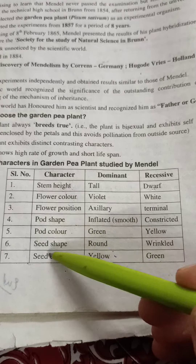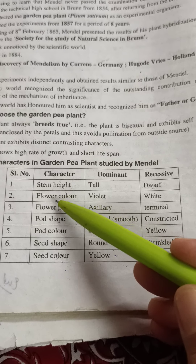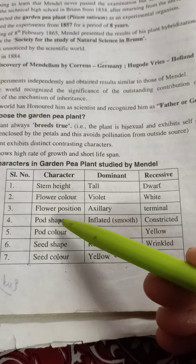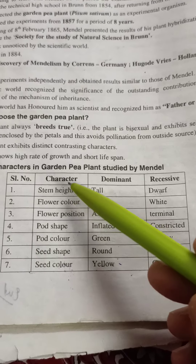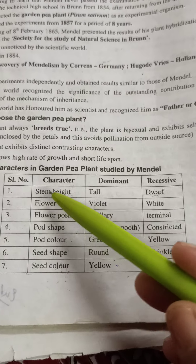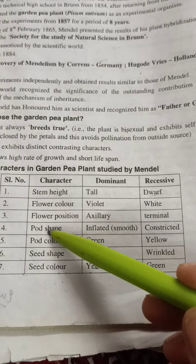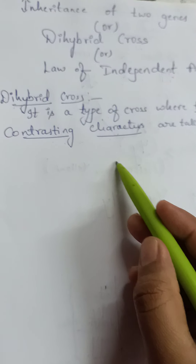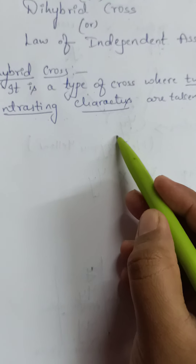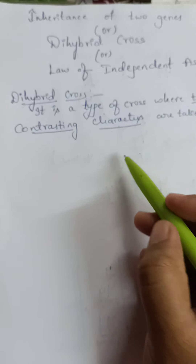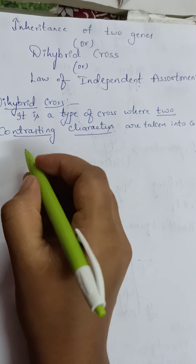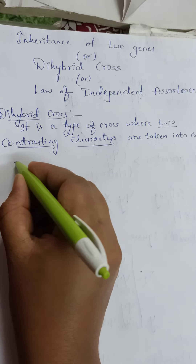We can take any two — for example stem height and flower color, or flower color with pod color, or pod shape with seed shape, or seed shape with seed color. You can take any two characteristic features for doing dihybrid cross. The crossing is not that difficult, but if you have understood monohybrid cross then only you can understand dihybrid cross, otherwise it will be very difficult. So if you have any doubts related to monohybrid cross, clarify those first.